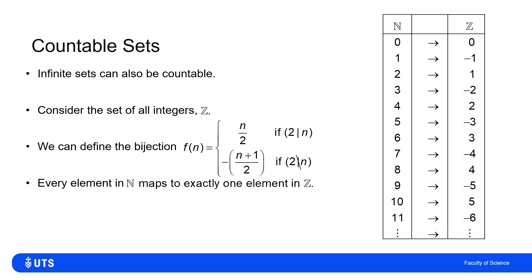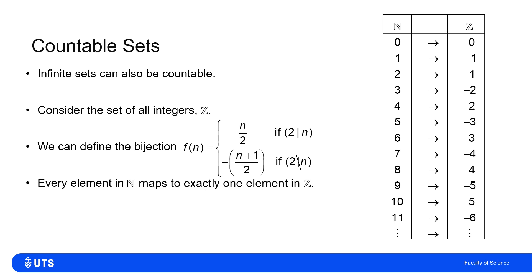So because every element in the natural numbers maps to exactly one element in the integers, I can say that this infinite set of integers is countable, because there is a bijection to some subset of the natural numbers, albeit an infinite subset of the natural numbers. So we refer to a set which is both infinitely large but still countable. You'll sometimes hear it described as countable, or sometimes countably infinite.